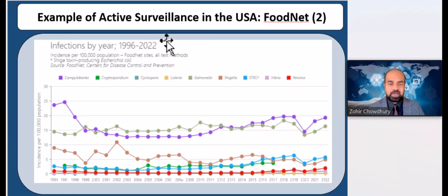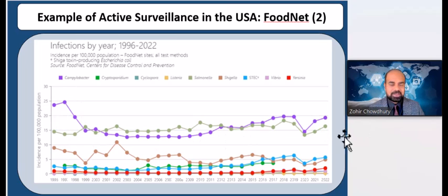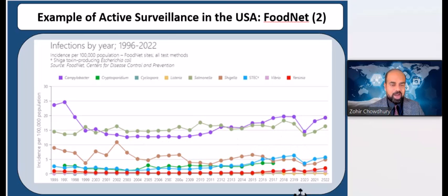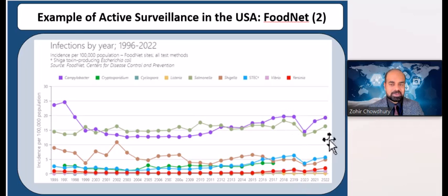Data from FoodNet can be shown for specific pathogens monitored, following disease trends from 1995 up to 2022. You can see trends of foodborne illnesses in those 10 states jurisdictions, displayed as incidence per 100,000 population. In 2020, a significant decline of all these diseases was observed due to COVID-related changes — restaurants closing, people having less access to health facilities. Through this active surveillance, you can capture this type of information.